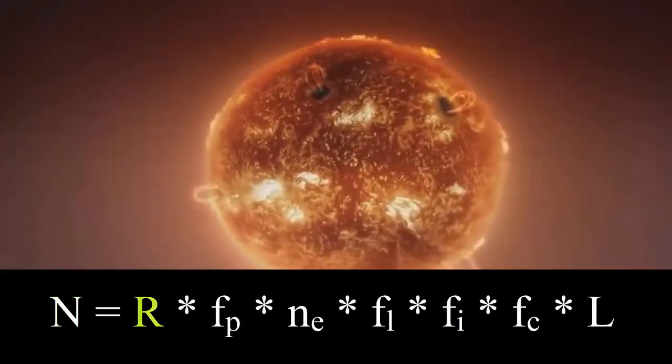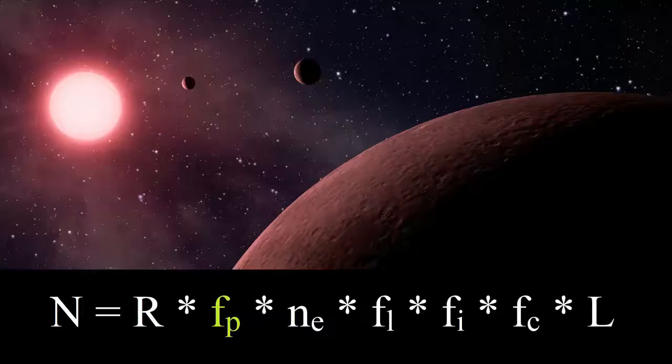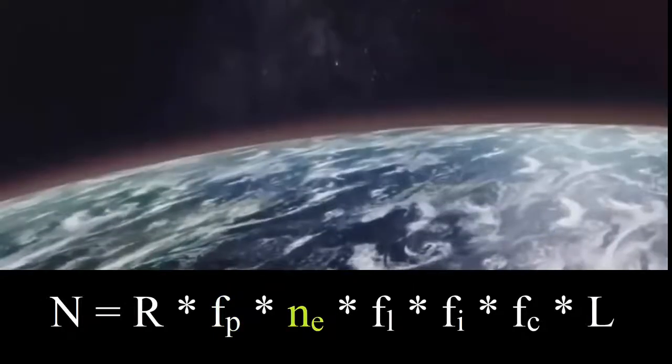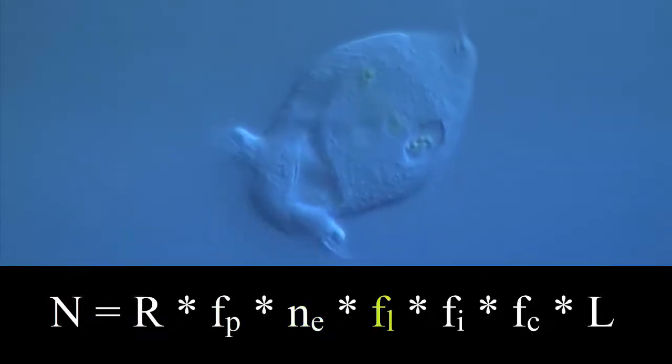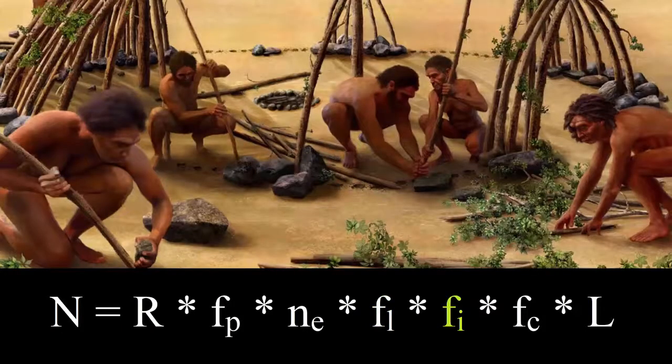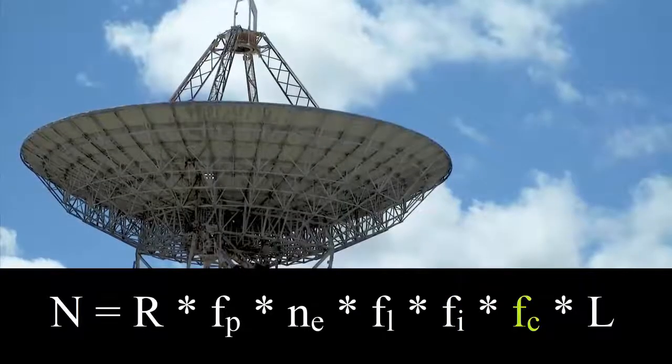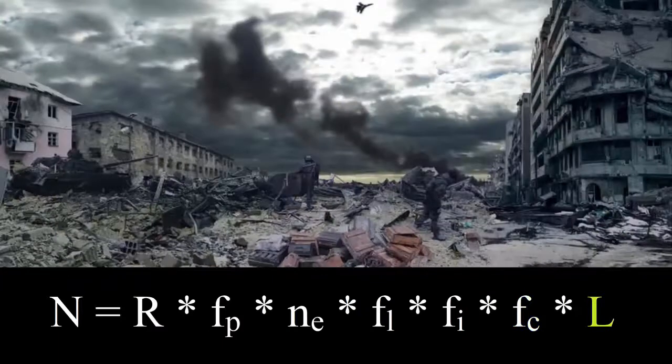R is the average rate of formation of suitable stars in the Milky Way galaxy. FP is the fraction of stars that form planets. NE is the average number of habitable planets per star. FL is the fraction of habitable planets where life emerges. FI is the fraction of habitable planets with life where intelligence evolves. FC is the fraction of planets with intelligent life capable of interstellar communication. L is the number of years a civilization remains detectable.